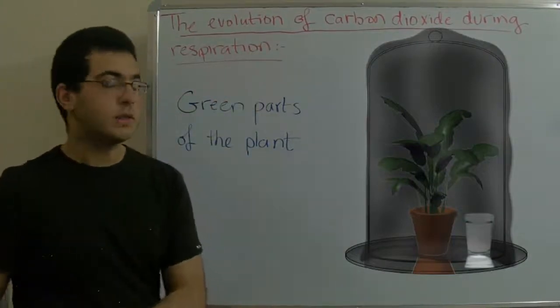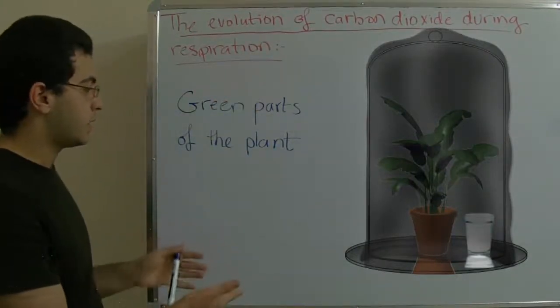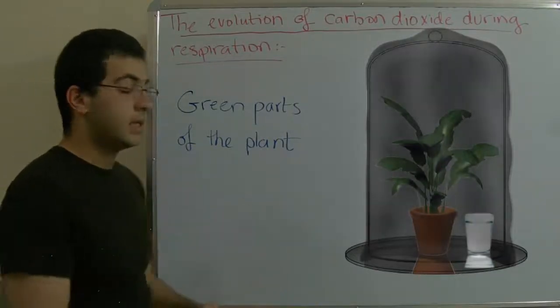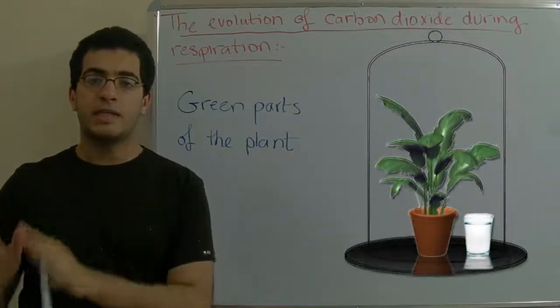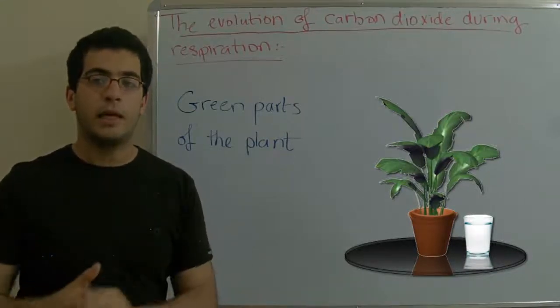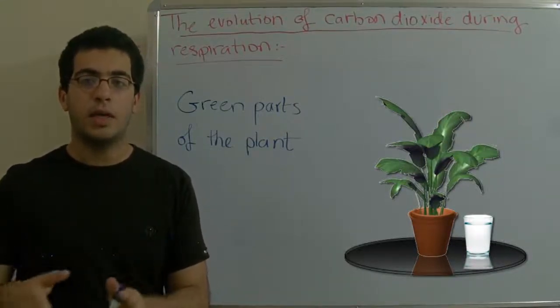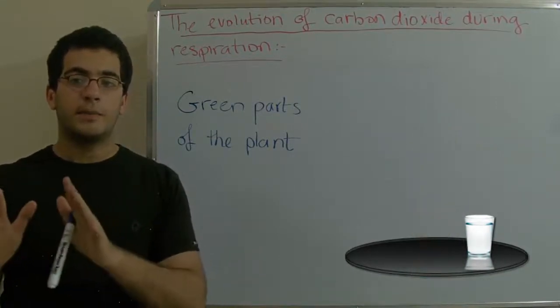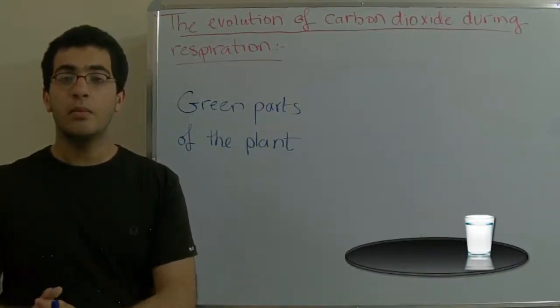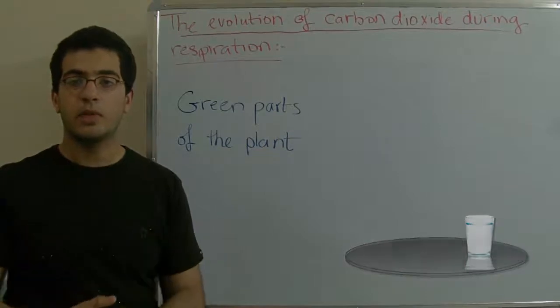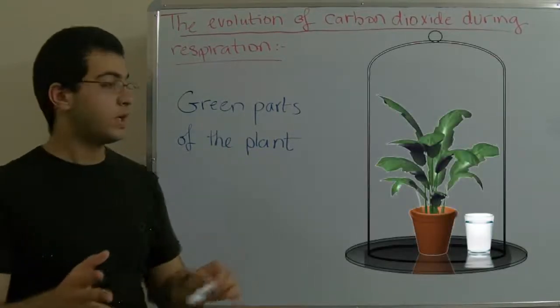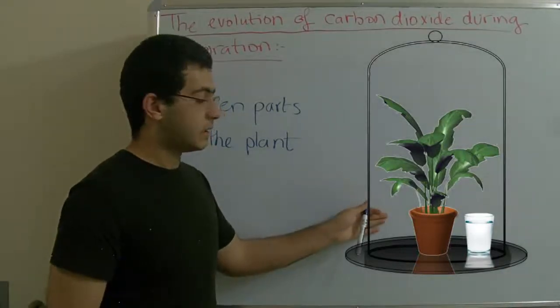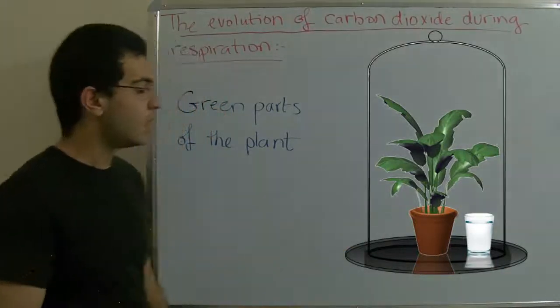Because the lime water turns turbid when it comes in contact with the carbon dioxide produced. This is the first apparatus. The second apparatus will be the same but without the black cloth or upside down beaker, and the third one will be glass with lime water subjected to fresh air. We will leave this for several hours.